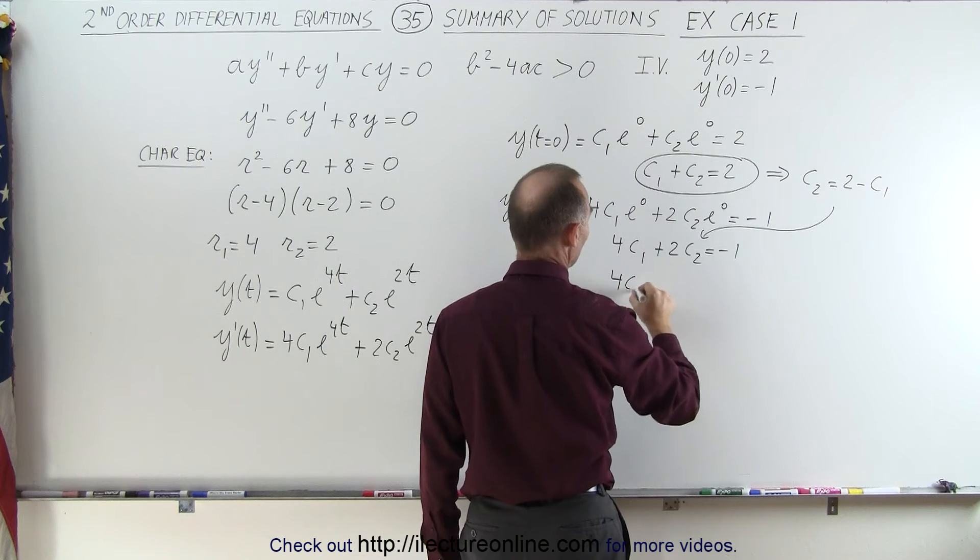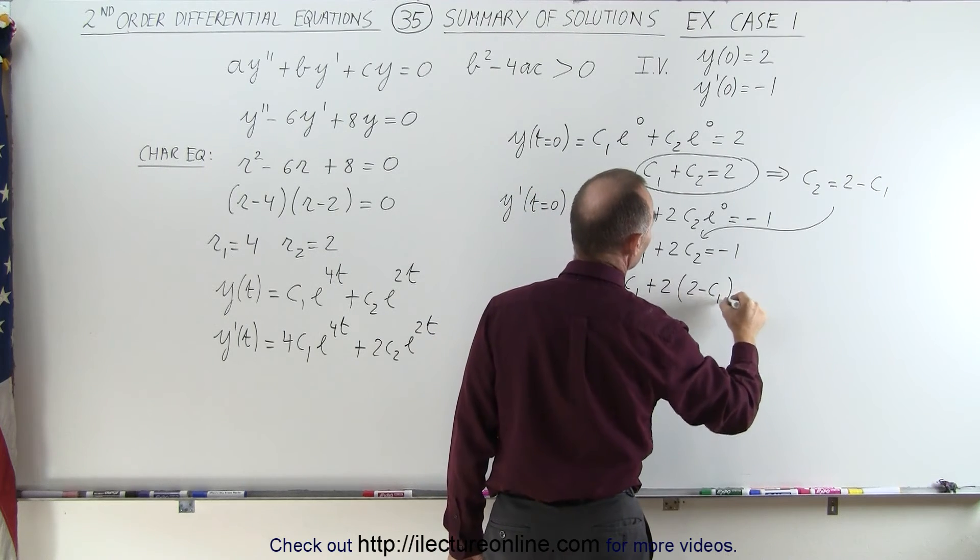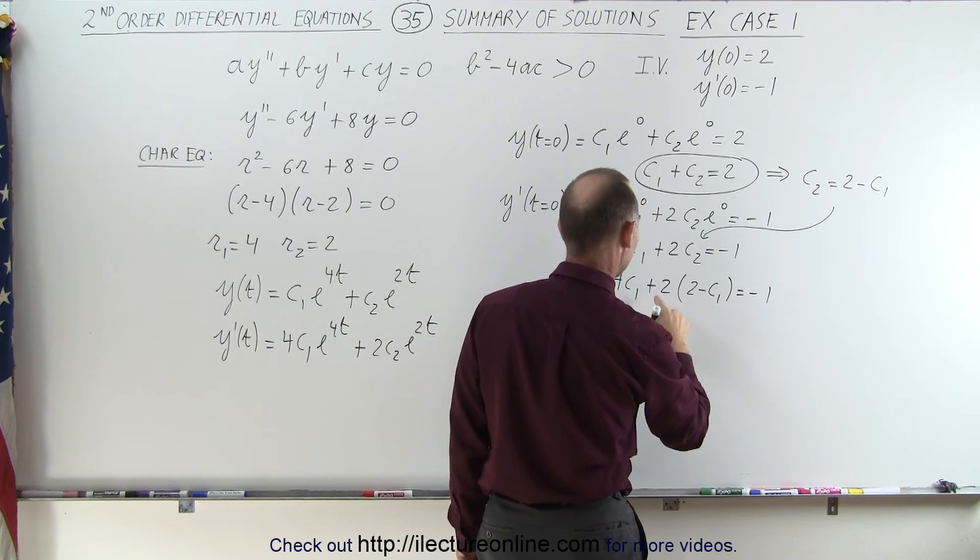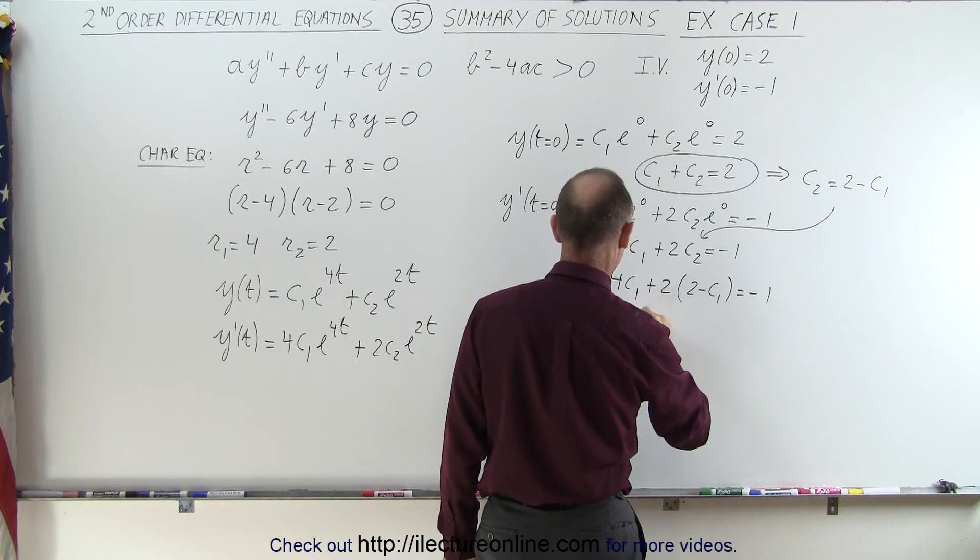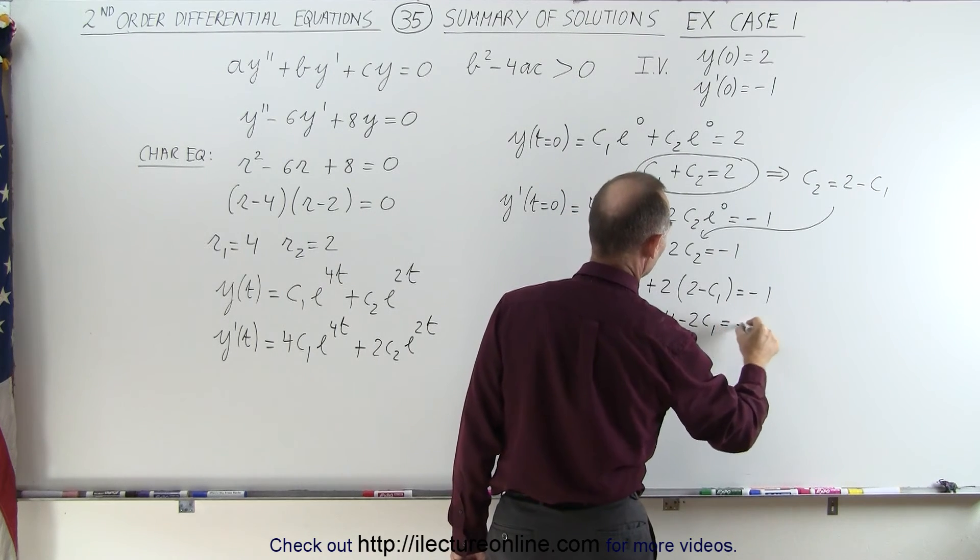When I do, I get 4c1 plus 2 times 2 minus c1 is equal to minus 1. And this gives us 4c1, well, let me multiply that. So 4c1 plus 4 minus 2c1 is equal to minus 1.